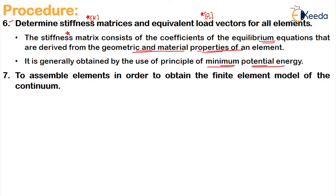Step 7 is to assemble the elements in order to obtain the finite element model of the continuum. Till now we have discretized the structure, and for each element calculated the shape function, stiffness matrix, and equivalent load vectors. Now we need to assemble them to form the original finite element model so that it becomes a continuum again.